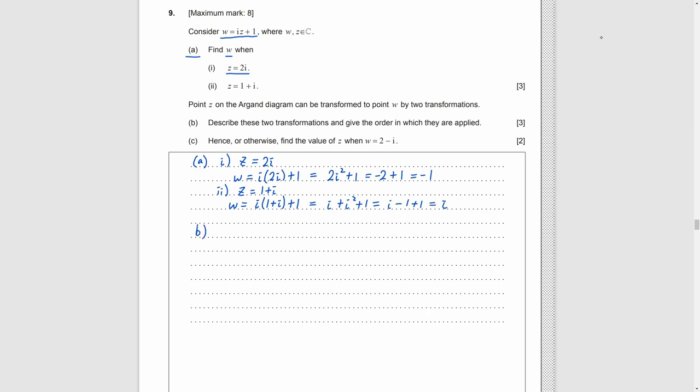Part B. We transform Z on the Argand diagram to W by two transformations. We need to describe the two transformations with the order. W is Zi plus 1. In complex plane, vertical axis is imaginary and horizontal axis is real. So Z times i means Z is rotated anti-clockwise by 90 degrees. And then we add 1 to it. As 1 is a real number, so we just move it to the right by 1 unit.